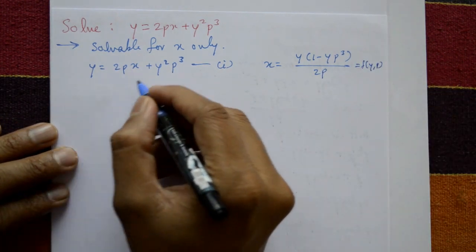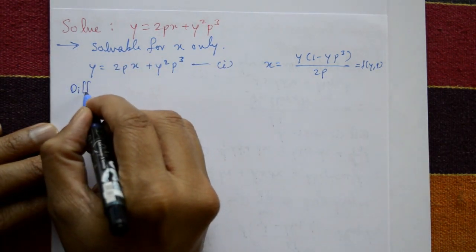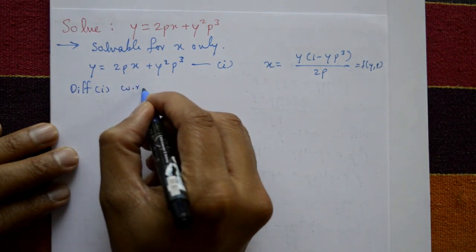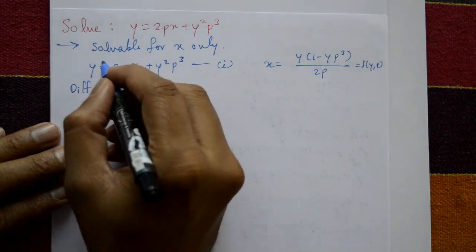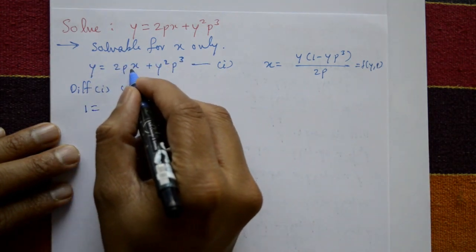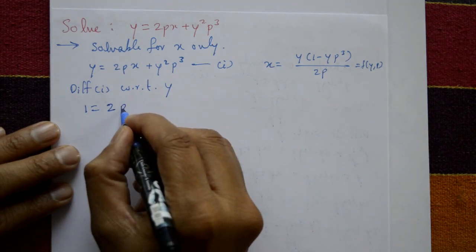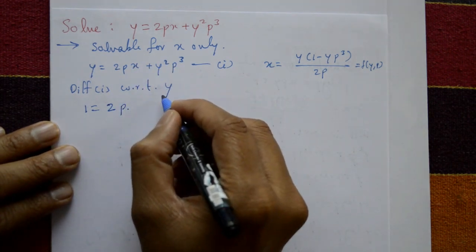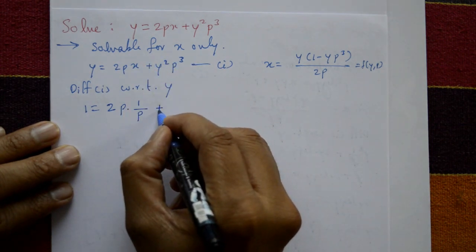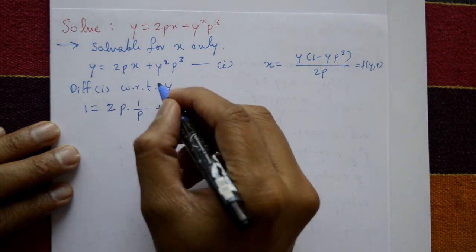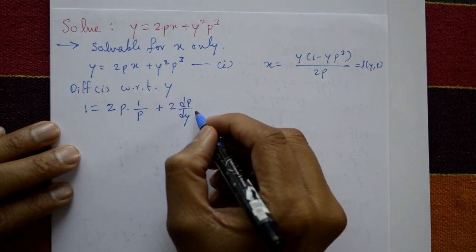Since the equation is solvable for x, differentiate equation one with respect to y. So dx/dy = 1/p. Applying the product rule: 2 times p differentiated — dx/dy is 1/p — plus 2 as-is, differentiate p giving dp/dy, with respect to y.